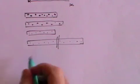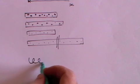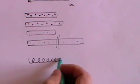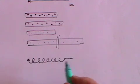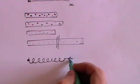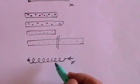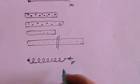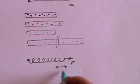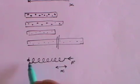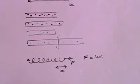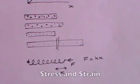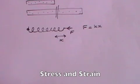Hooke's law can work not only by extending a spring but also by compressing it. If you fix the spring at one end and put a force on it pushing inwards, there will be a reduction in the length of the spring by a distance x, and once again the Hooke's law formula F equals kx applies.